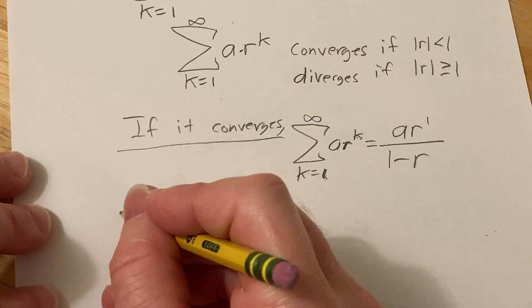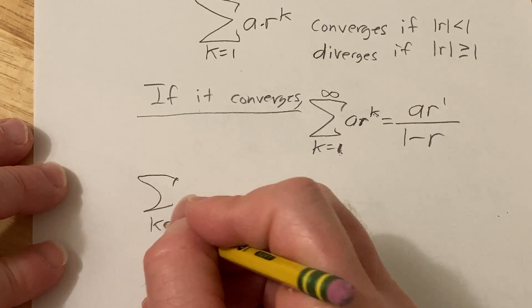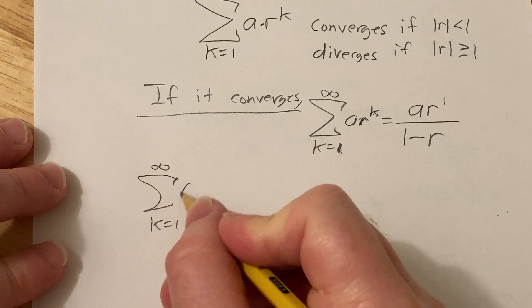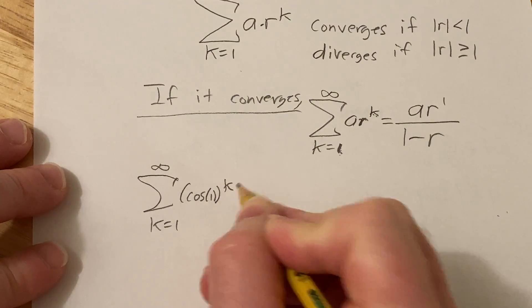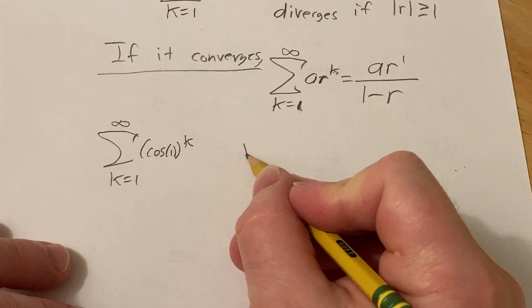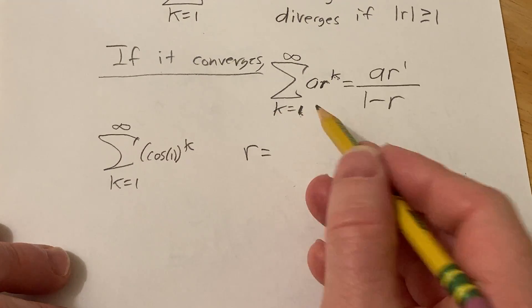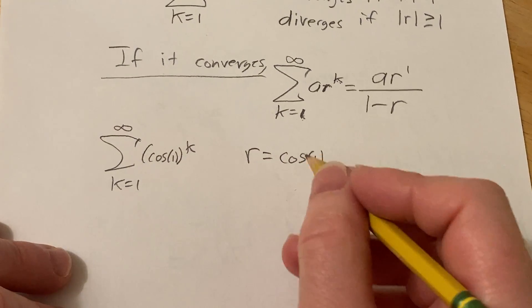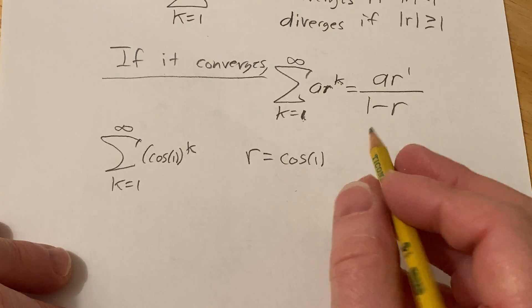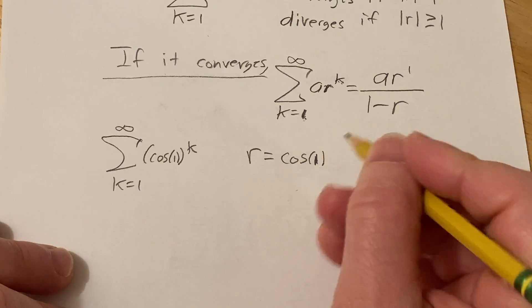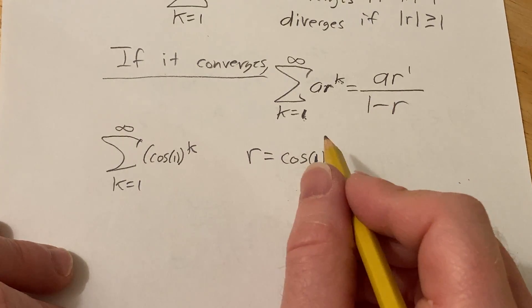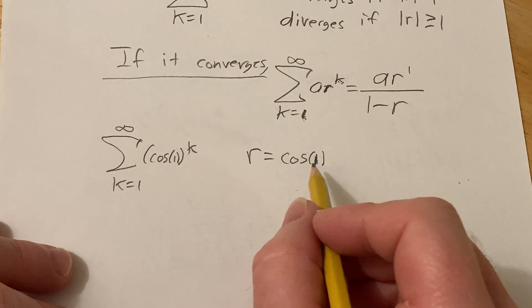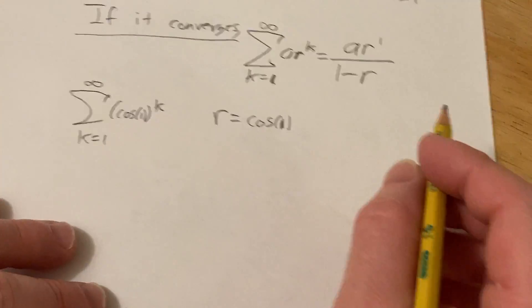Alright, so in our particular problem, we have this infinite sum, and it's cosine of 1 to the kth power. So our r here is obviously cosine of 1, and 1 here is in radians, right? So usually when we're working with calculus, the default angle measure is the radian measure. So you have to decide if this is less than 1 in absolute value.